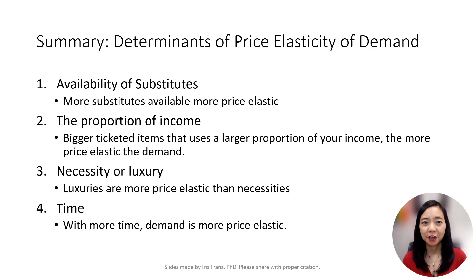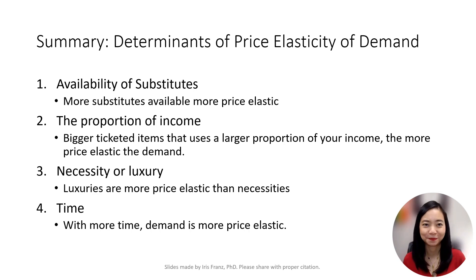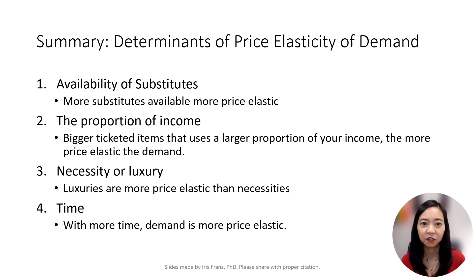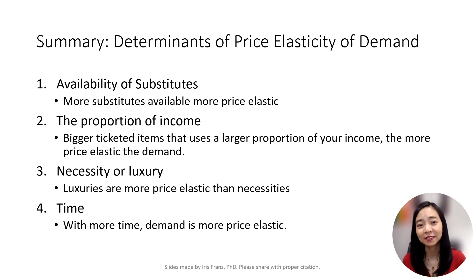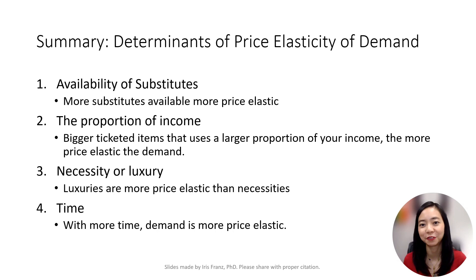To summarize, here are the four determinants of price elasticity of demand: availability of substitutes, the proportion of income, necessity or luxury, and time. The more substitutes are available, the higher the price elasticity of demand. The larger the proportion of income an item costs, the higher the price elasticity of demand. A luxury — something we can do without — has a higher price elasticity of demand than a necessity. Finally, the more time one has, the higher the price elasticity of demand.